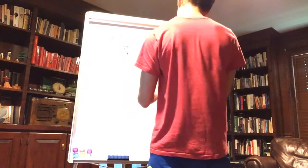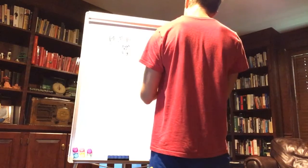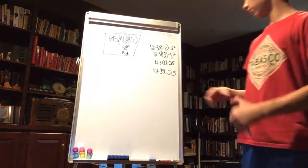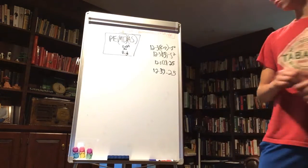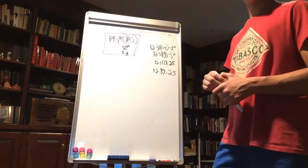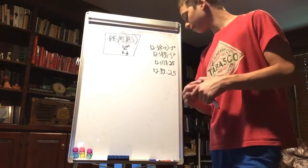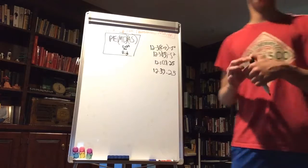12 minus 39 minus 25. So then you just do this from left to right. 12 minus 39 minus 25, and then that will give you your answer.